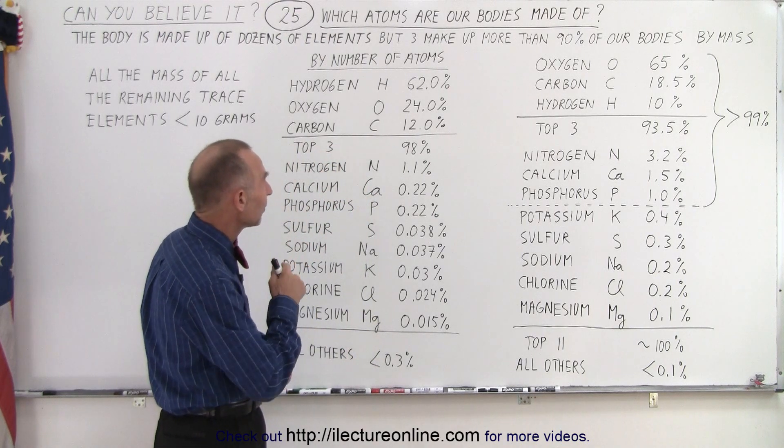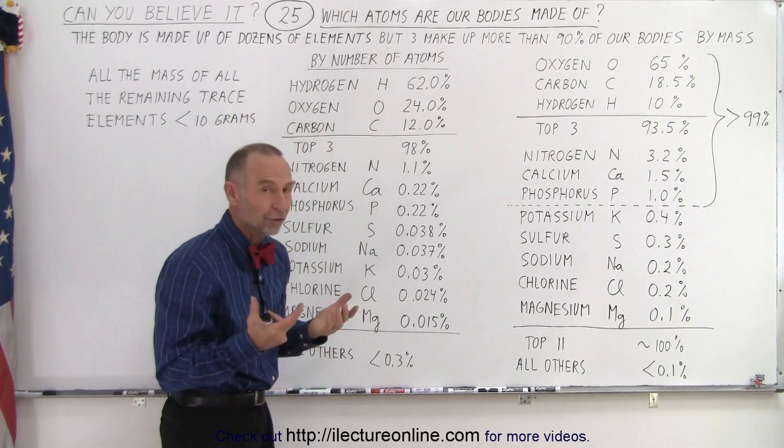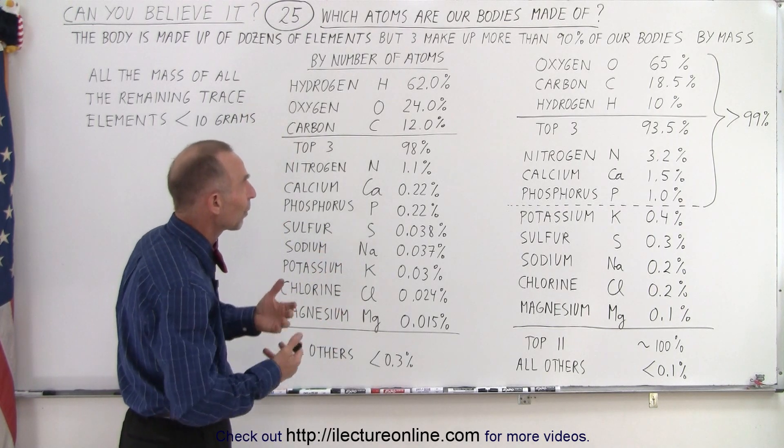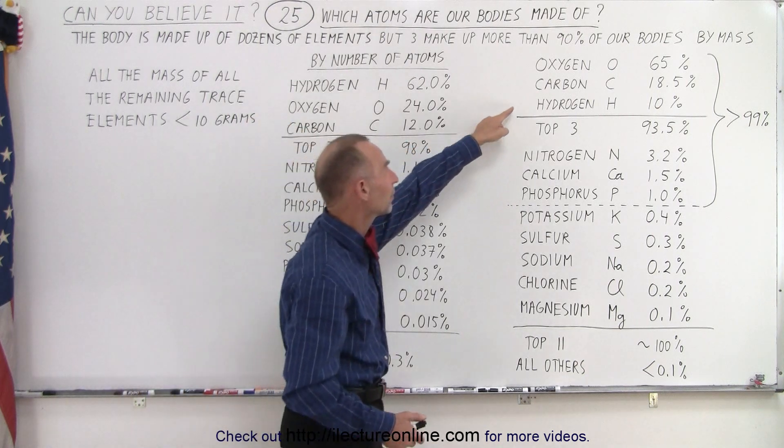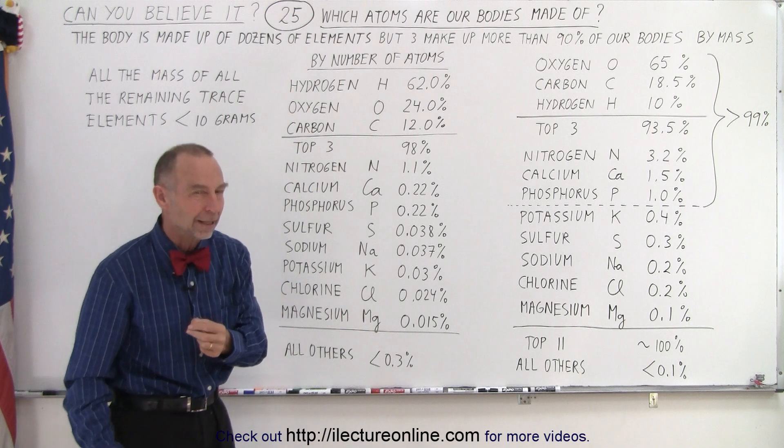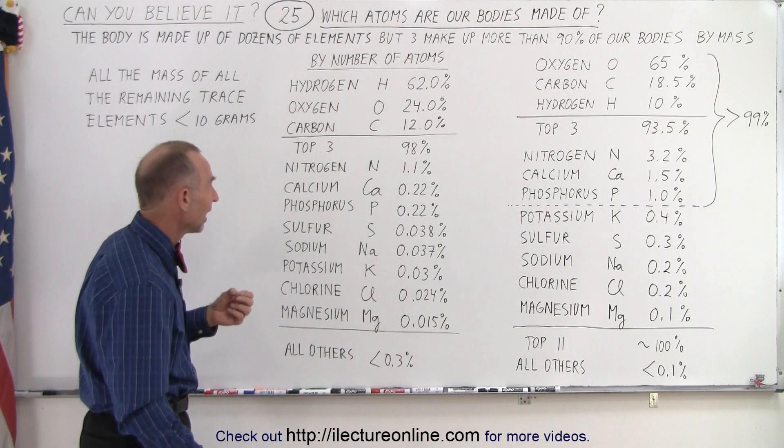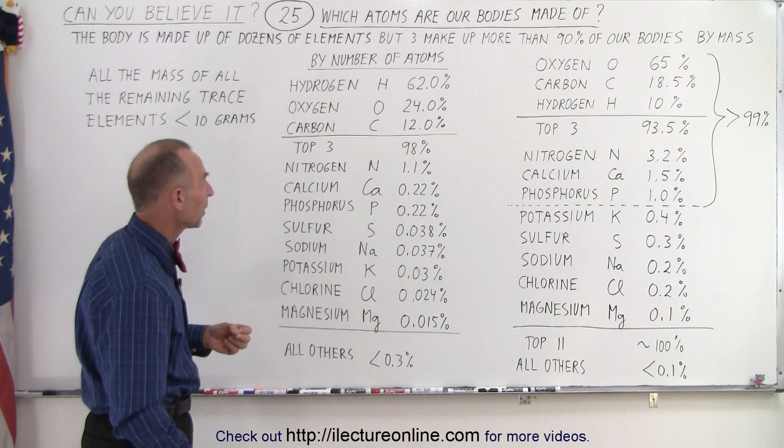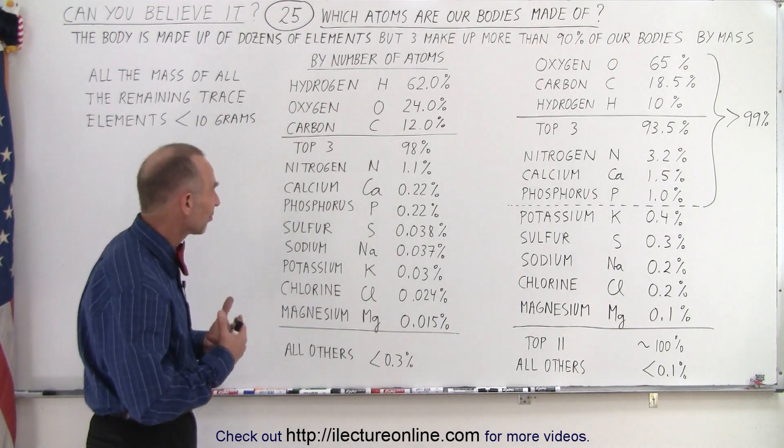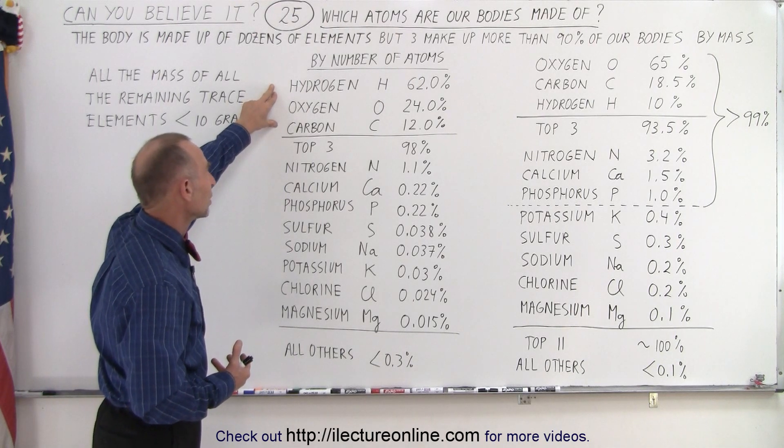When we do it by the number of atoms, the first three haven't changed except the order has changed. Hydrogen, of course, is a smaller atom and there's more of them. That's why by mass, there's not as much of it. But by atom, notice that 62% of the atoms in our body are hydrogen atoms, 24% are oxygen atoms, and 12% are carbon atoms. So based on the number of atoms, 98% of our bodies are made up of those first three elements.